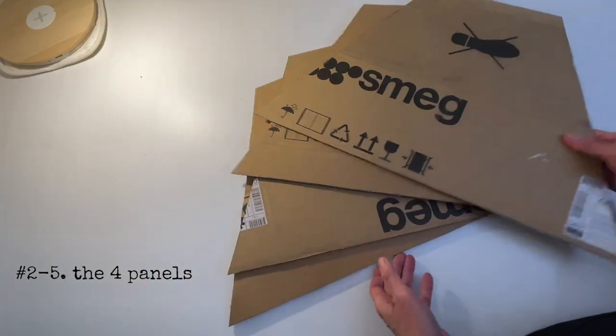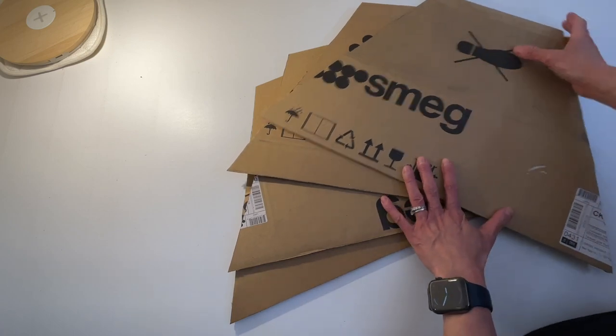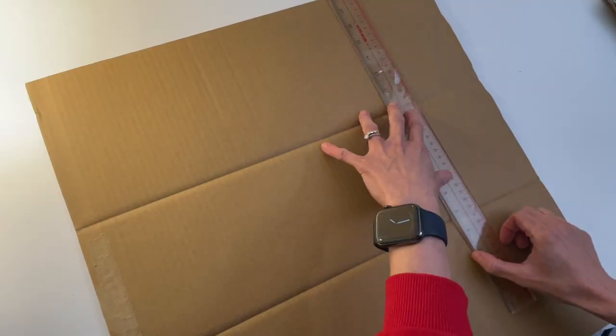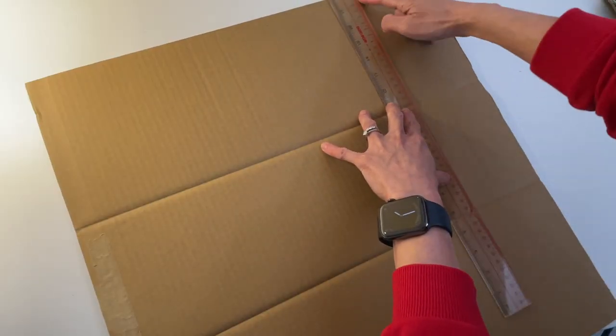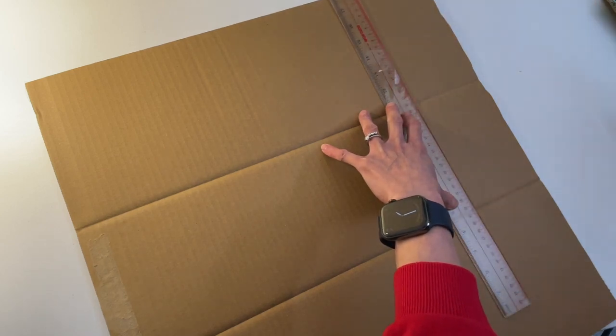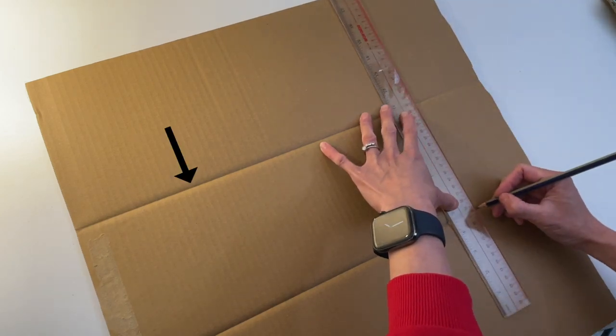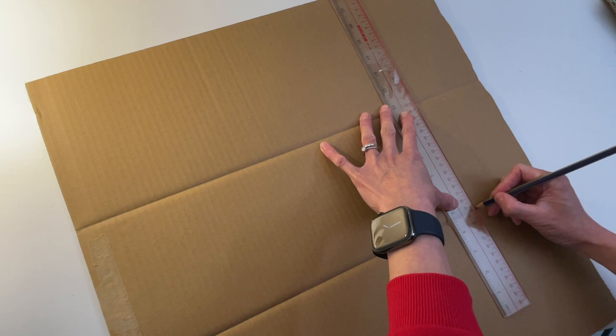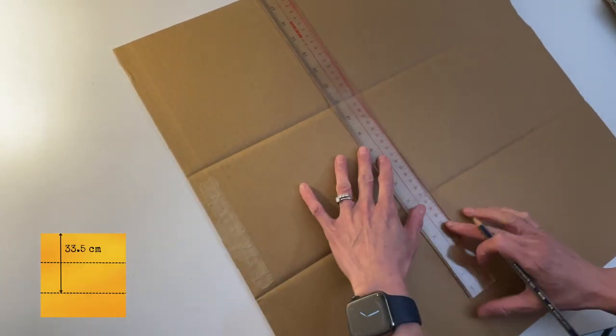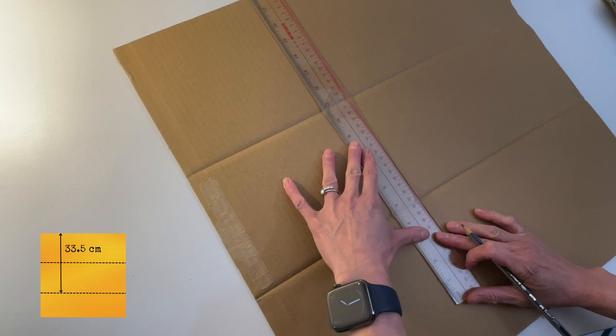Now let's move on to pieces number two to five, which are the four panels of the softbox. They should look like this. Let me show you how I did it. First of all, I need to decide the height of the panel. As you can see, there are two natural folds on the cardboard, so I decided the height of it is up to the second natural fold, which is 33.5 centimeters.